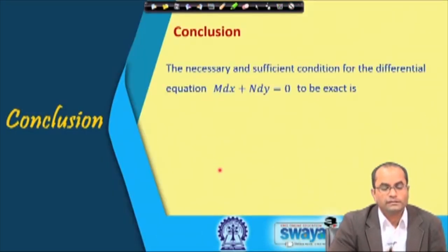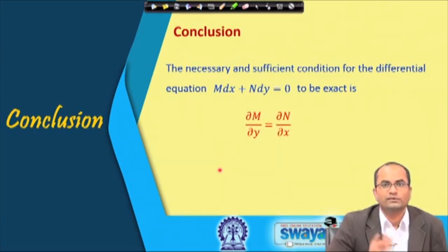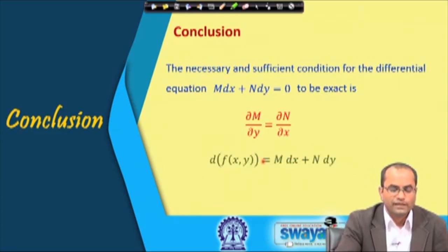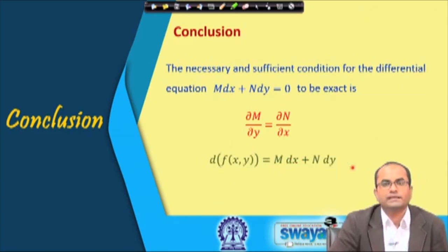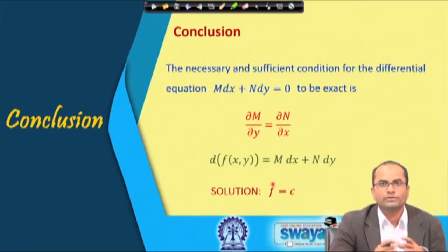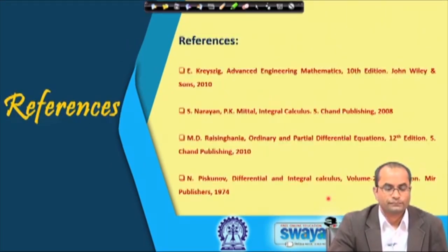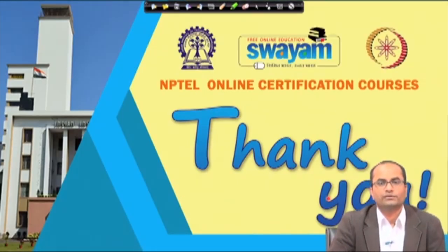In conclusion, the necessary and sufficient condition for M dx + N dy to be exact is ∂M/∂y = ∂N/∂x. Once the equation is confirmed exact, we find f whose differential equals M dx + N dy and write the solution as f = c. In the next lecture, we will discuss what method to use when the given differential equation is not exact. Thank you for your attention.